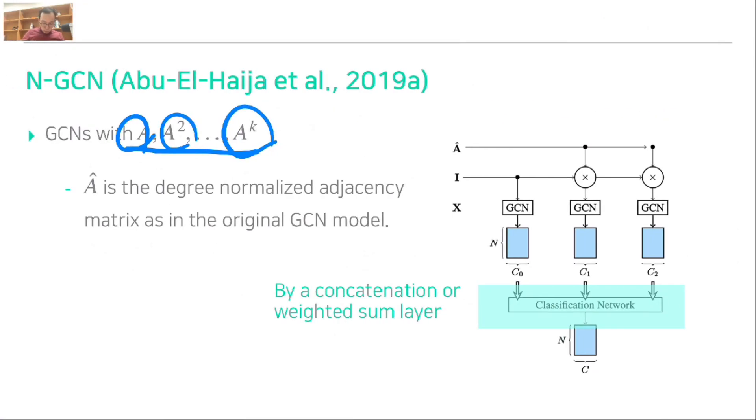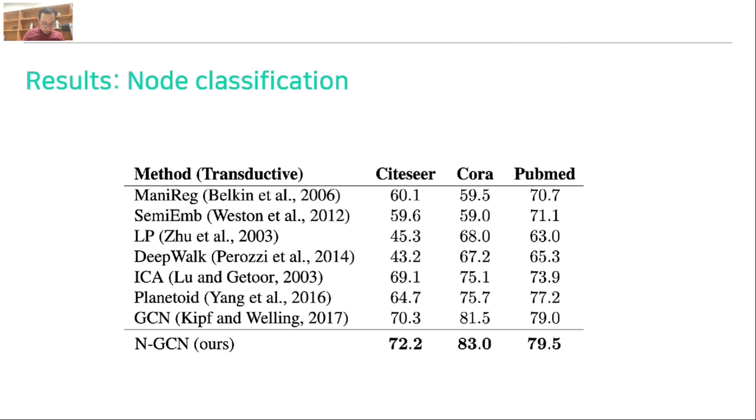We compute A, A-square, and A-cube, and we feed those information to the GCNs and utilize their outputs. At the same time, we can get final representation of the nodes. To combine those three outputs, we just use concatenation or various layers. The result-wise for the node classification task compared to the GCN, it is slightly better.